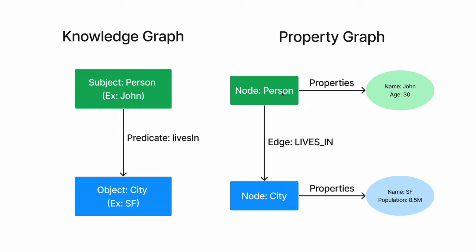That's where property graphs help you. Property graphs as a structure have nodes, labels, relationships, and properties attached to each of these nodes or entities. For example, Person and City are the labels here with the relationship 'lives in', and there are properties attached to each of these Person and City nodes. For example, Person has name 'John' and age 30, and City has name 'SF' and population 8.5 million. So this is the difference between how a property graph and knowledge graph look at a broader level.